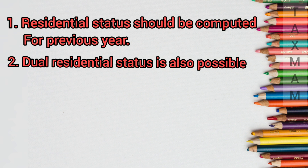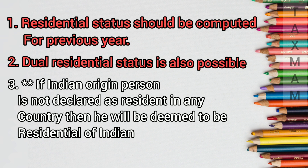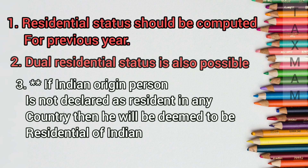The second point: dual residential status is also possible. That means a person may be called an Indian resident and at the same time may be called a resident in America. The main important amendment in the year 2020 to 2021 was that an individual who is an Indian citizen and not liable to pay tax in any country will be deemed to be an Indian resident and will be liable to pay tax in India.